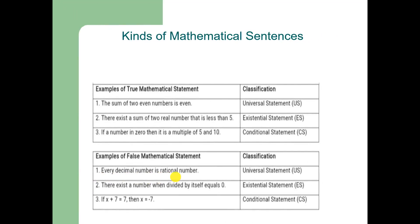There are certain types of mathematical sentences. For example, 'the sum of two even numbers is even' is a universal statement. 'There exists a sum of two real numbers that is less than 5' is an existential statement. 'If a number is 0, then it is a multiple of 5 and 10' is a conditional statement. Some examples of false mathematical statements include: 'every decimal number is a rational number' — a universal statement; 'there exists a number when divided by itself equals 0' — an existential statement; and 'if x + 7 = 7, then x = −7' — a conditional statement.